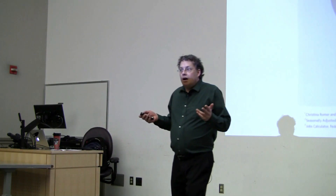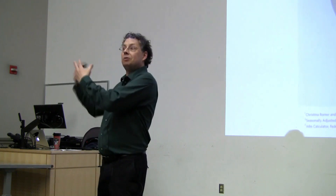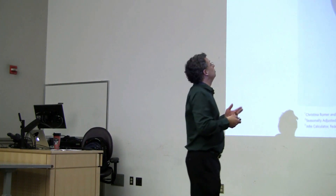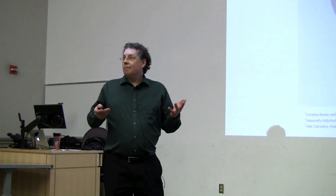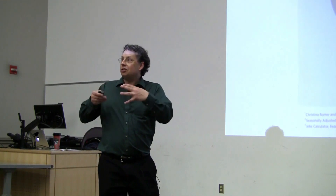Bullshit reaches its apogee in the political sphere, and it's certainly true with Venn diagrams. This is something Mitt Romney's campaign put together — it's called the 'middle class promise gap.' As a candidate, Barack Obama promised to lower the unemployment rate, then there's the current unemployment rate which is higher, and there's a gap of 8.4 million fewer jobs. But these bear no relationship to a pair of overlapping things. These are just three claims that have been pasted into the MasterCard logo to make them look data-y, graphic-y, trustworthy. A duck.